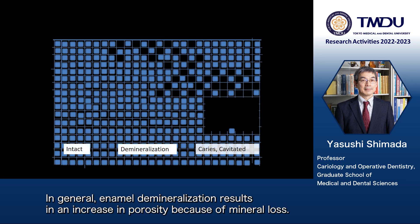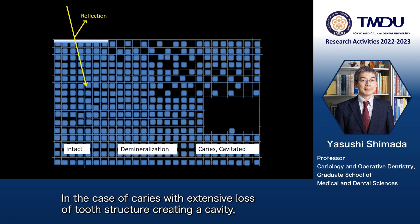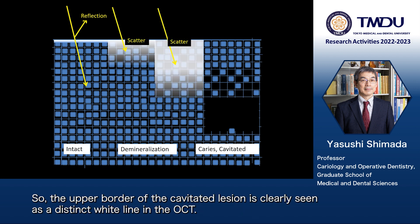In general, enamel demineralization results in an increase in porosity because of mineral loss. So the brightness of demineralization with numerous porosity, where rescattering of light occurs, increases in an OCT image. In the case of caries with extensive loss of tooth structure creating a cavity, the upper border of the cavity reflects light, so the upper border of the cavitated region is clearly seen as a distinct white line in the OCT.